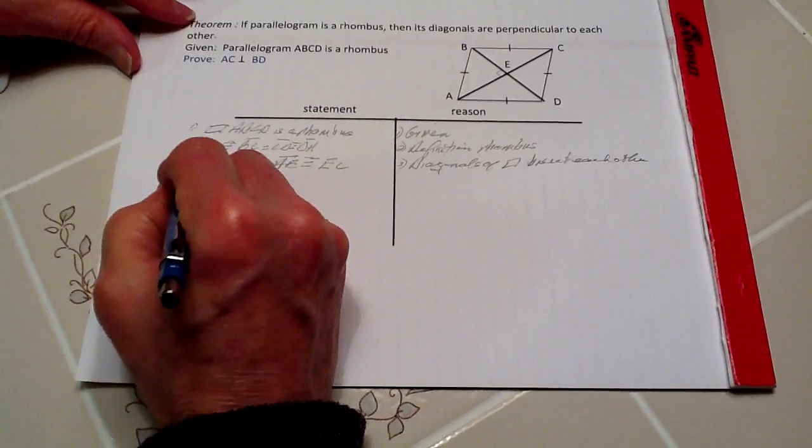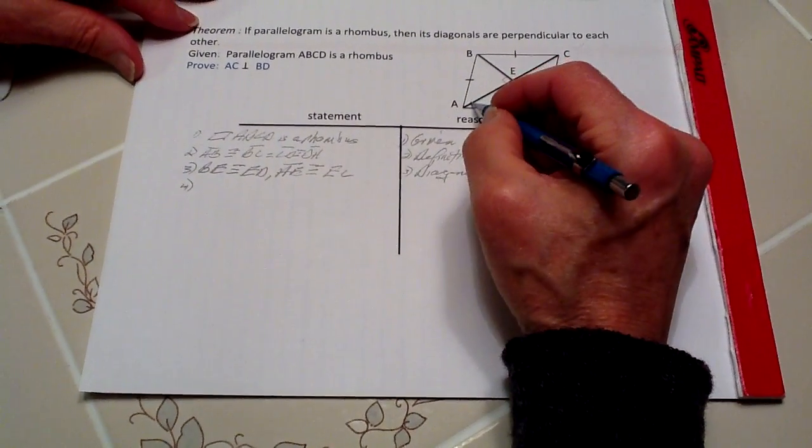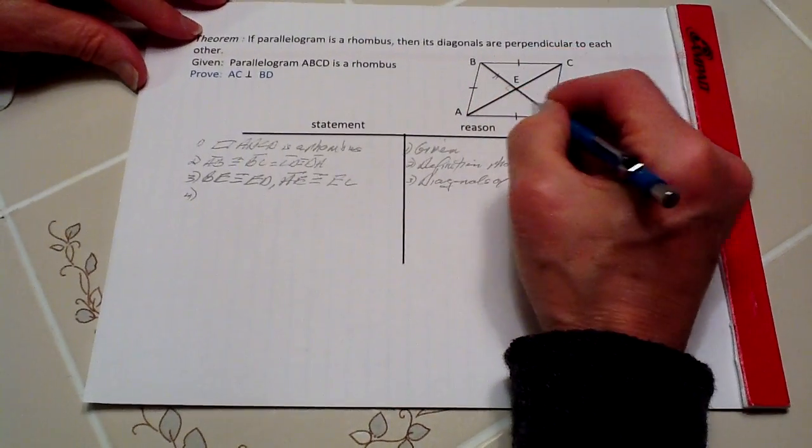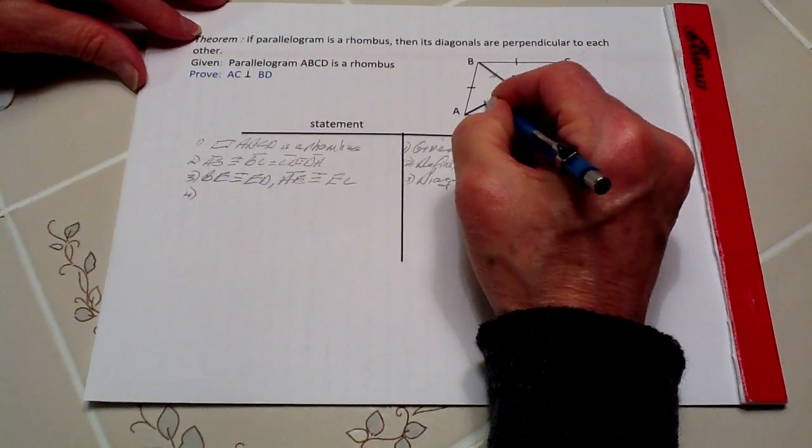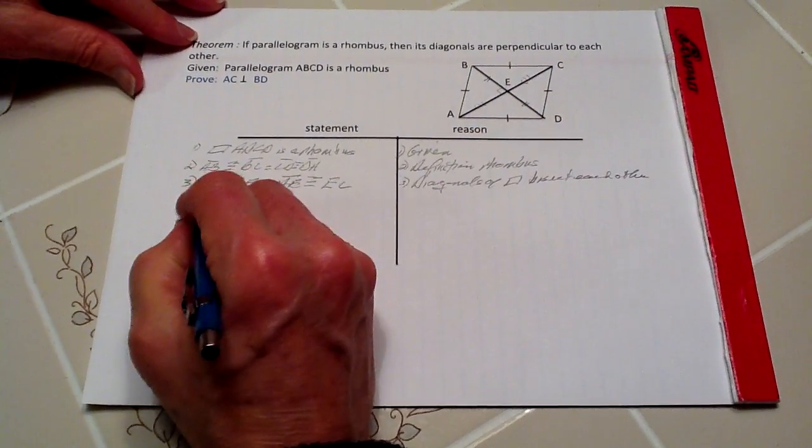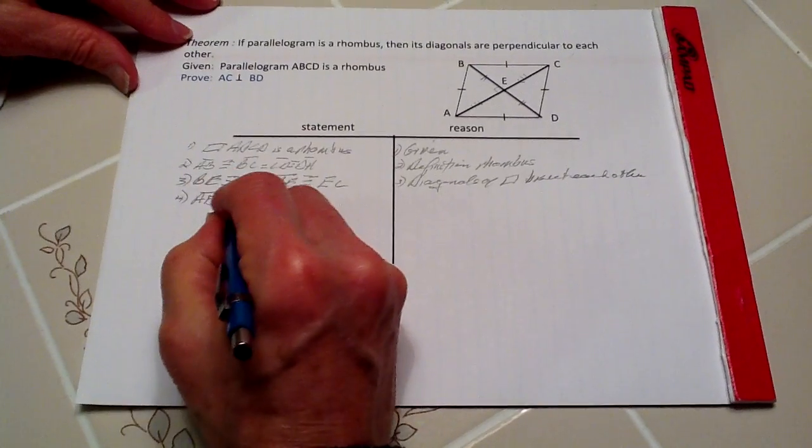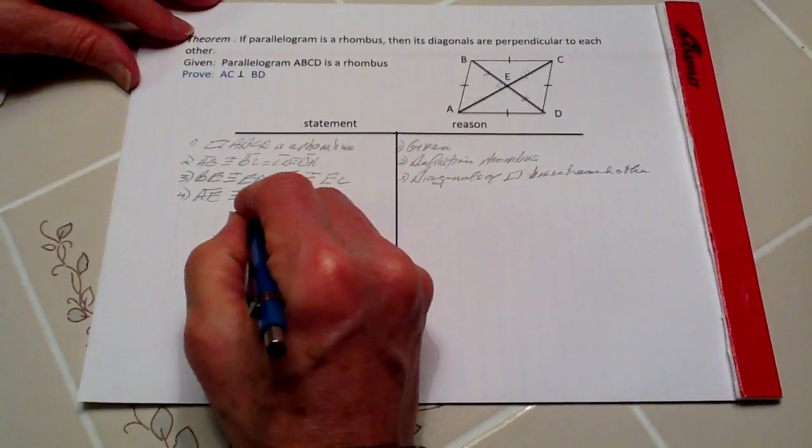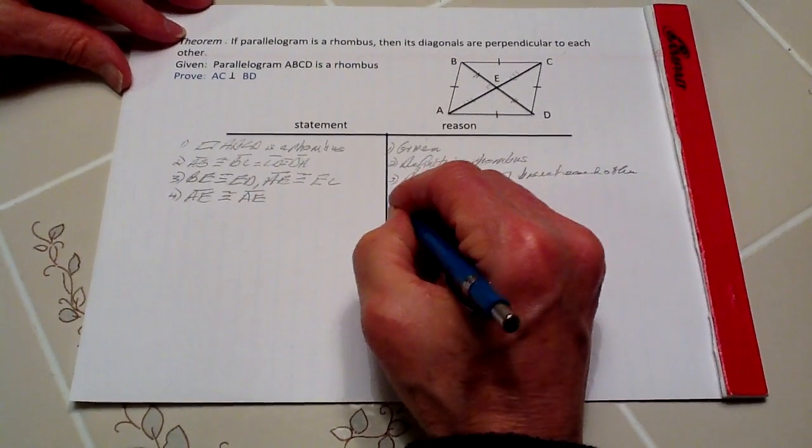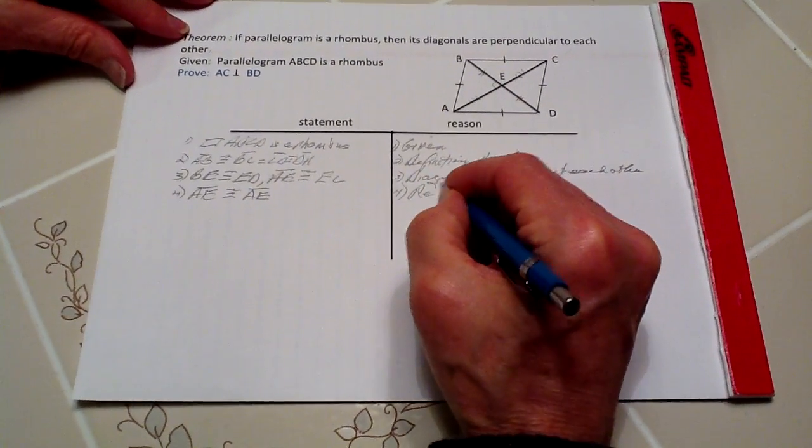Now, number four, we know that AE is congruent to EC. In fact, we said that here. And we also know that segment AE is congruent to segment AE because it is by the reflexive property.